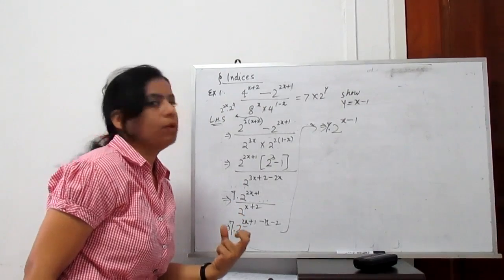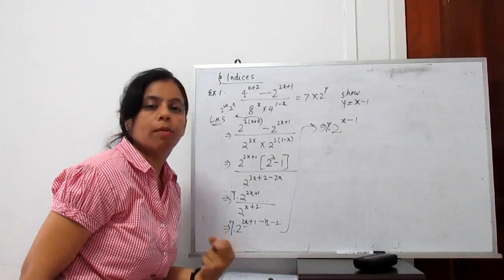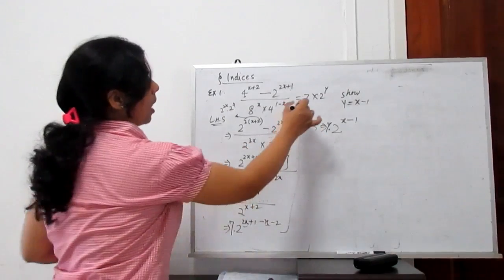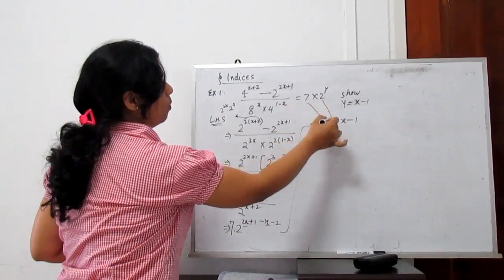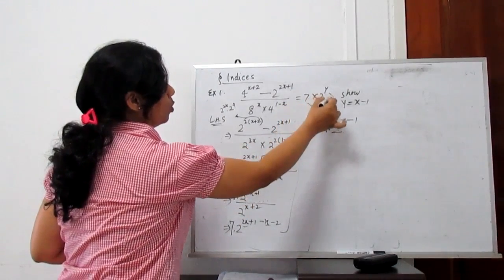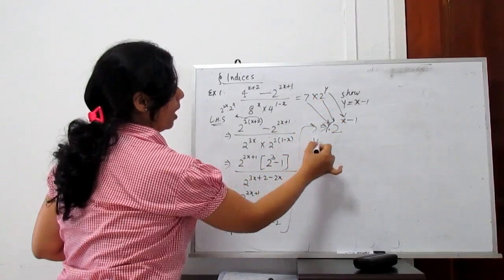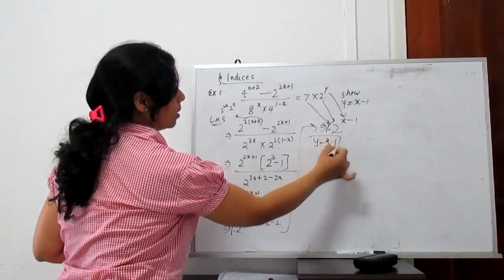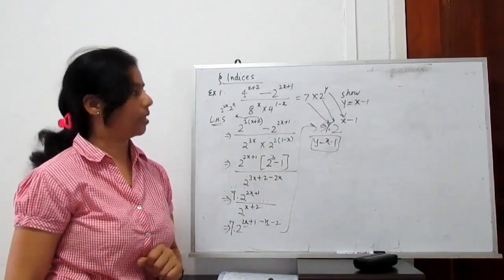Now compare 7 with 7, base 2 with base 2, and y with y. So y gives the value x minus 1. Hence proved.